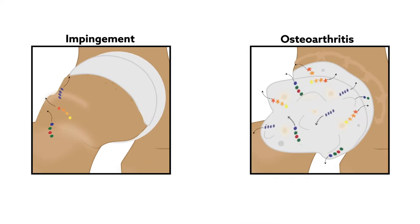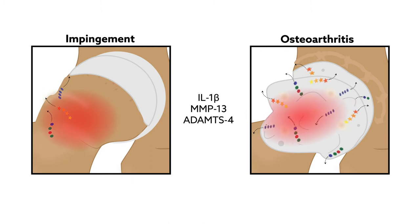The progression from impingement to osteoarthritis is believed to be mediated by the release of inflammatory molecules across the hip cartilage, but the exact mechanisms are unknown. To address this gap, researchers tracked levels and patterns of inflammatory markers in cartilage from patients with symptoms of impingement. Their findings highlight the role of inflammation in upsetting joint homeostasis.